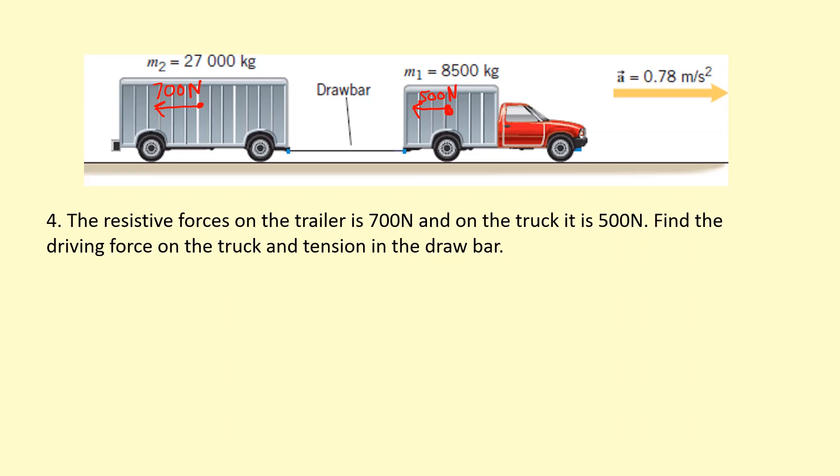We need to find the driving force on the truck. So that's going to be pushing it forward. So it's going to be quite big as well. So I'm going to call that x. And the tension in the drawbar. The tension in the drawbar is actually going to pull the truck backwards. It's going to pull the truck backwards, it's like almost being pulled back by the trailer. But it's going to pull the trailer forwards. It's the same tension in this case.